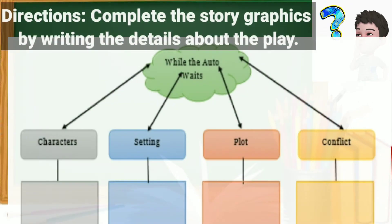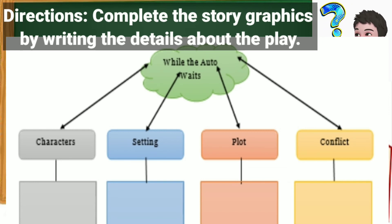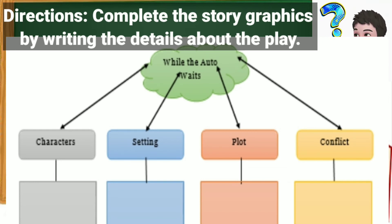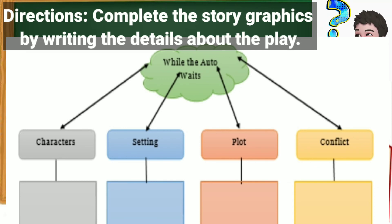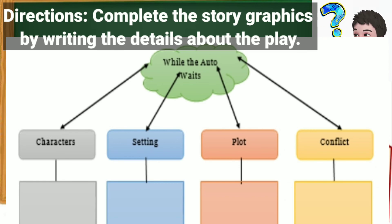In your answer sheet, complete the story graphics by writing details about the play — the characters, the setting (when and where it happened), the plot, the episodes, and the conflict. Identify the main problems or conflicts found in the story or play.